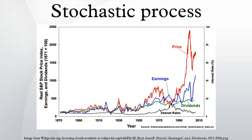The Kolmogorov extension proceeds along the following lines: assuming that a probability measure on the space of all functions exists, it can be used to specify the joint probability distribution of finite-dimensional random variables. From this n-dimensional probability distribution we can deduce n-dimensional marginal probability distributions. Note that the obvious compatibility condition — that this marginal probability distribution be in the same class as the one derived from the full stochastic process — is not a requirement. Such a condition only holds, for example, if the stochastic process is a Wiener process, but not in general. When this condition is expressed in terms of probability densities, the result is called the Chapman–Kolmogorov equation. The Kolmogorov extension theorem guarantees the existence of a stochastic process with a given family of finite-dimensional probability distributions satisfying the Chapman–Kolmogorov compatibility condition.